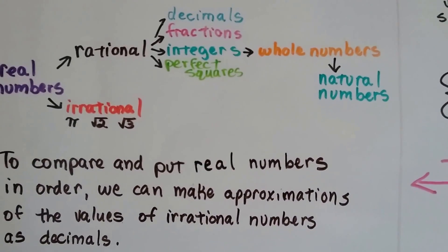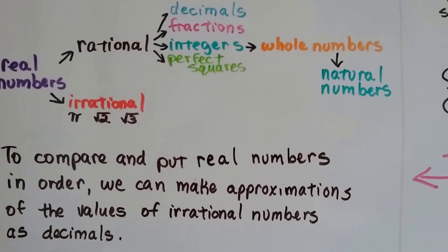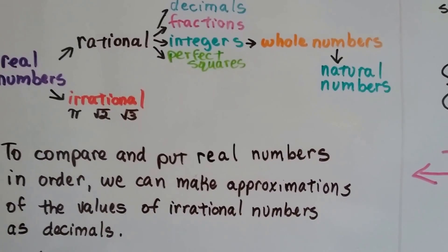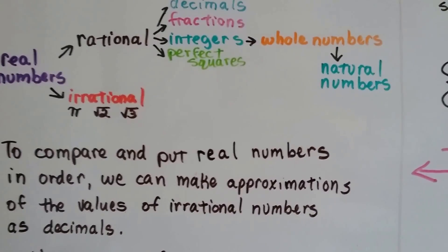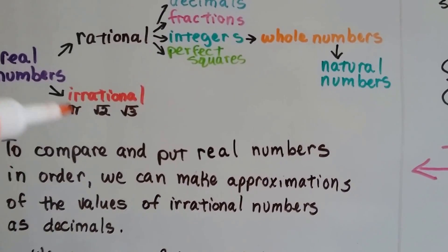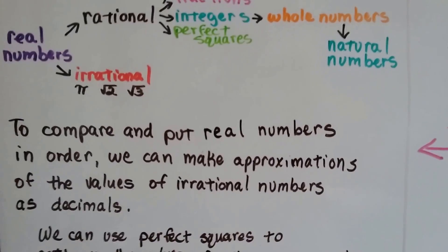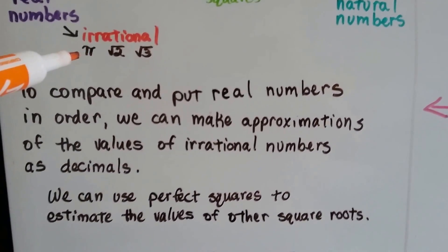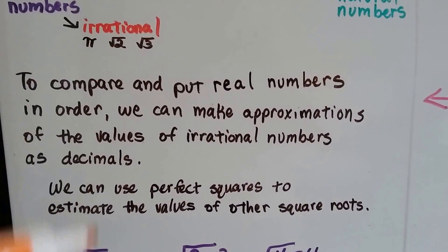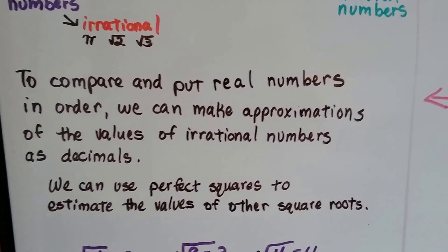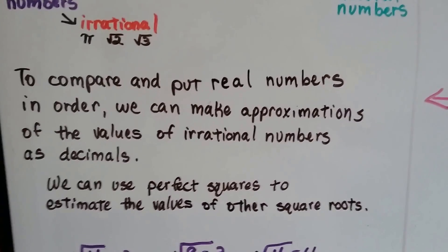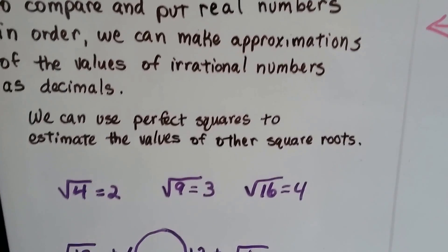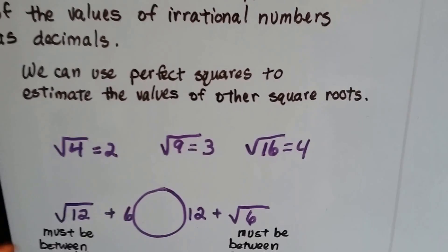To compare and put real numbers in order, we can make approximations for the values of irrational numbers as decimals. We can approximate pi or the square root of 2, and we can use perfect squares to estimate the values of other square roots that aren't perfect.